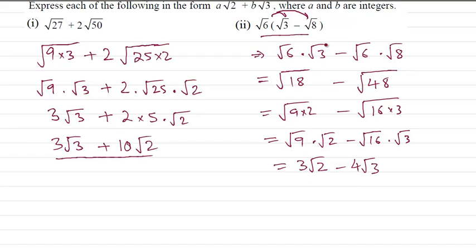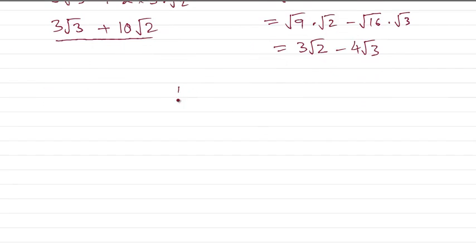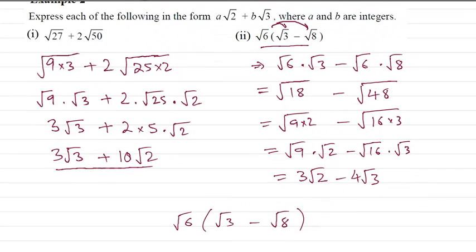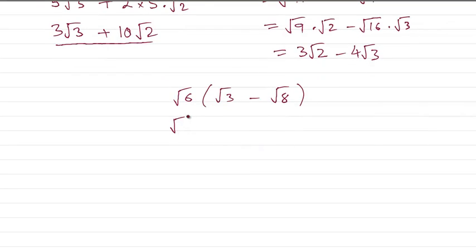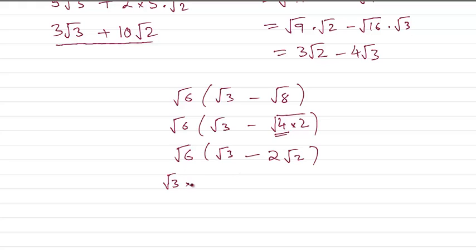Or we could have done this question as to here so we got root 6 times root 3 minus root 8. Root 6 in bracket, so root 6 in bracket, root 8 can be written as 4 times 2 so then we split, you're going to get the answer to be root 3, square root of 4 is going to be 2 times root 2, and 6 can be written as root 3 times root 2.